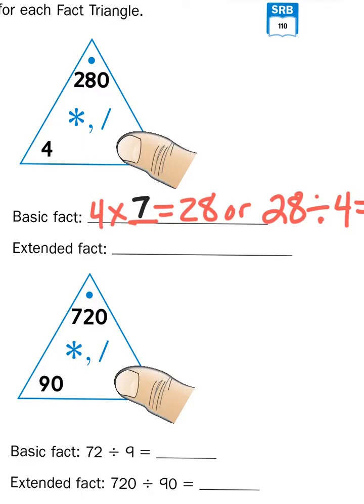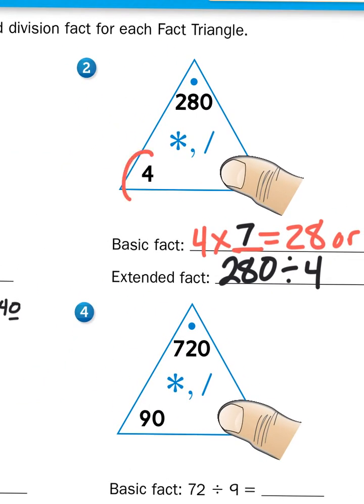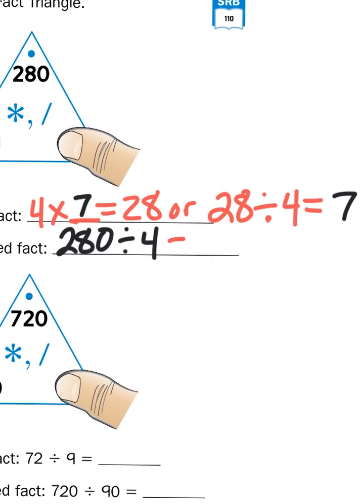So, if I have 28 tens, or 280, and if I divided that into 4 groups, because 4 is the factor I know, I'm going to have 7 groups of 10, or 70. 4 times 7 tens, or 4 times 70, equals 280. There's a 0 in one of the factors, there's a 0 in the product. And that's all we're doing here when we are extending division facts.